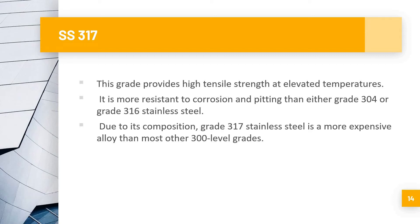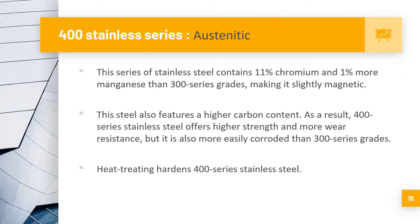The 400 series, also known as the martensitic series, contains 11% chromium and 1% manganese more than 300 series grades. It is slightly magnetic and features a high carbon content. As a result, 400 series stainless steel offers high strength and more wear resistance, but it is also more easily corroded than 300 series grades. Heat treating hardens 400 series stainless steel.